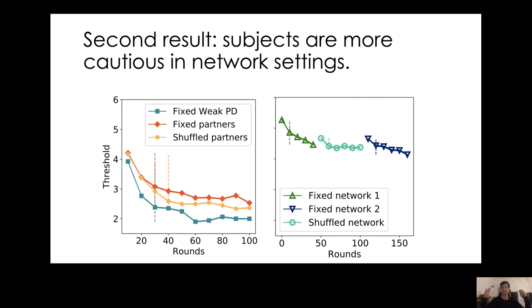When we compare these two curves, they are very similar. However, pairwise experiments are less difficult for subjects, while network settings are perceived as more difficult and subjects are more cautious. This is expected because there are more opponents to keep track of.